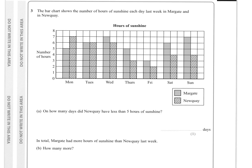Question 3. The bar chart shows the number of hours of sunshine each day last week in Margate and Newquay. On how many days did Newquay have less than five hours of sunshine? Well, the five-hour mark is here. We can clearly see that we had one day, two days, three days — there are four days there where there was less than five hours of sunshine. It then says in total Margate had more hours of sunshine than Newquay. How many more?